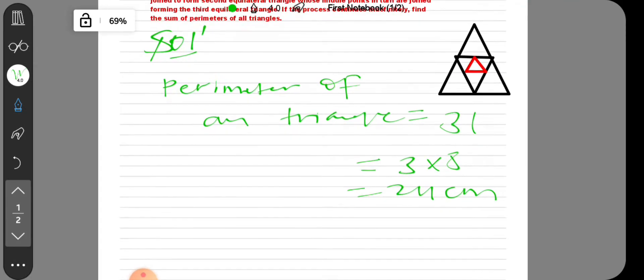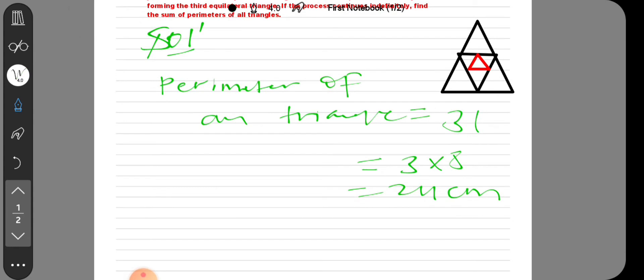Next case: the first triangle has perimeter 24 centimeter. Now the middle terms are joined to form the second triangle.